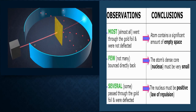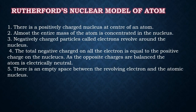Rutherford's conclusions: First observation — almost all alpha particles went through the gold foil without deflection — conclusion: the atom contains a significant amount of empty space. Second observation — a few bounced directly back — conclusion: the atom's dense core nucleus must be very small. Third observation — some passed through and were deflected — conclusion: the nucleus must be positively charged, demonstrating the law of repulsion.